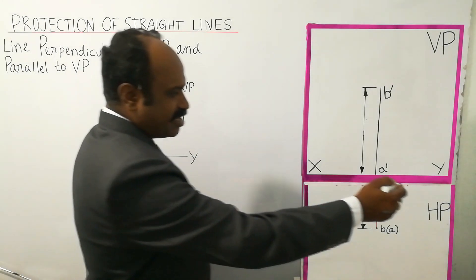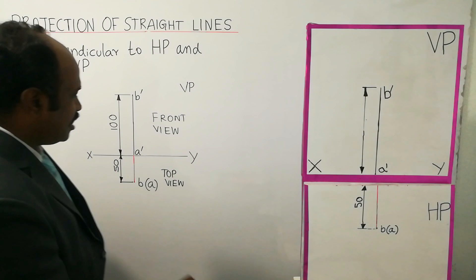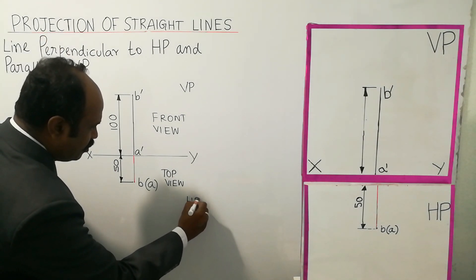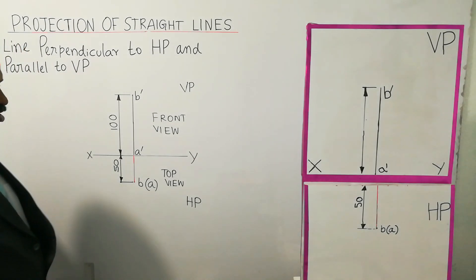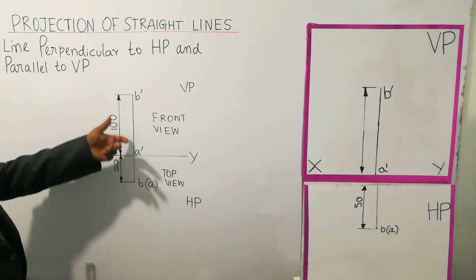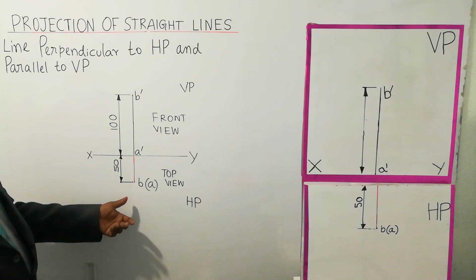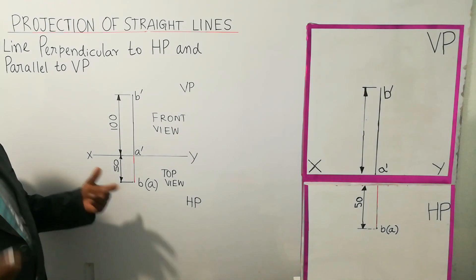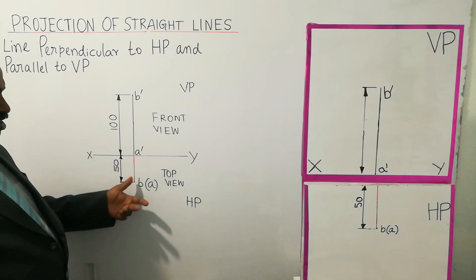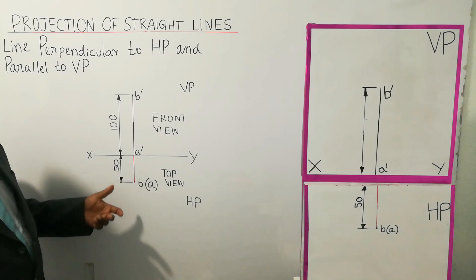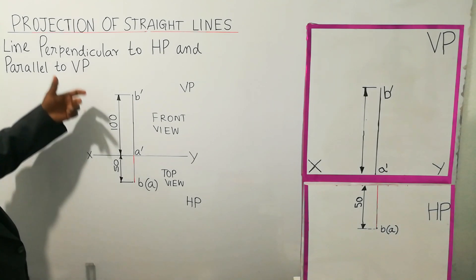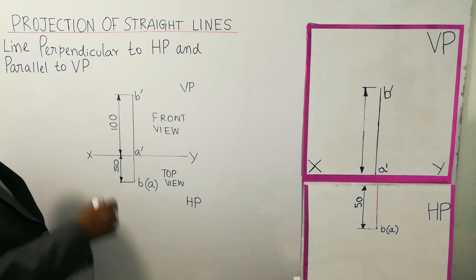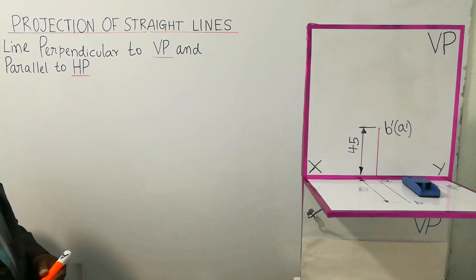Now, the XY line — below the XY line is the HP. Above the XY line will be the front view and below the XY line will be the top view, as per first angle projection. First angle projection is the first quadrant object placement. That is the orthographic projection. This is the projection of straight lines.